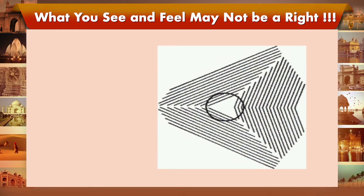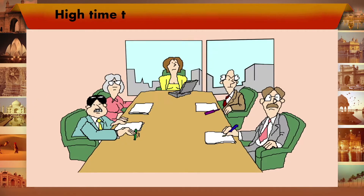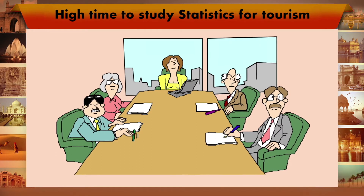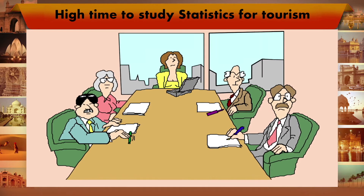Now look at the circle. A perfect circle in this slide may look like an imperfect one. The reason is that whatever we feel and see may not always be right. We need to justify our results by supporting them with relevant data and analysis. After getting an idea of what we will be discussing, it is the right time to start with statistics.